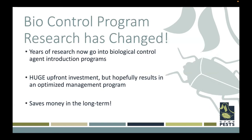The good news is that the research has changed heavily. Years of research now go into these biological control agent introduction programs. One project I'll talk about had tens of millions of dollars going into studying these biological control agents — but in the long term, $10 million is not a ton of money if we're going to save growers $50 million in the next 20 years. The goal of these biological control programs is to save money in the long term with a lot of research and investment upfront.